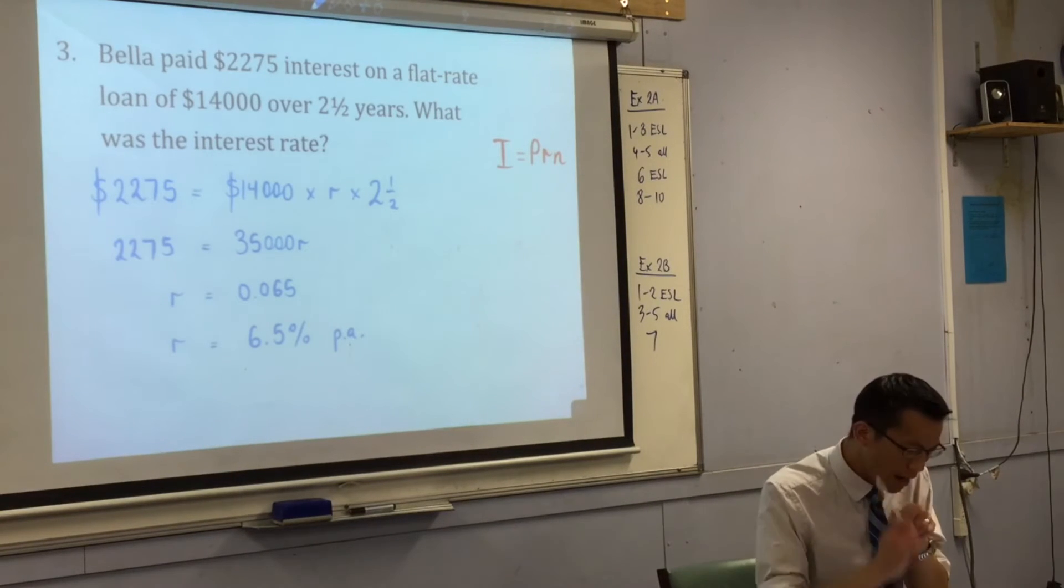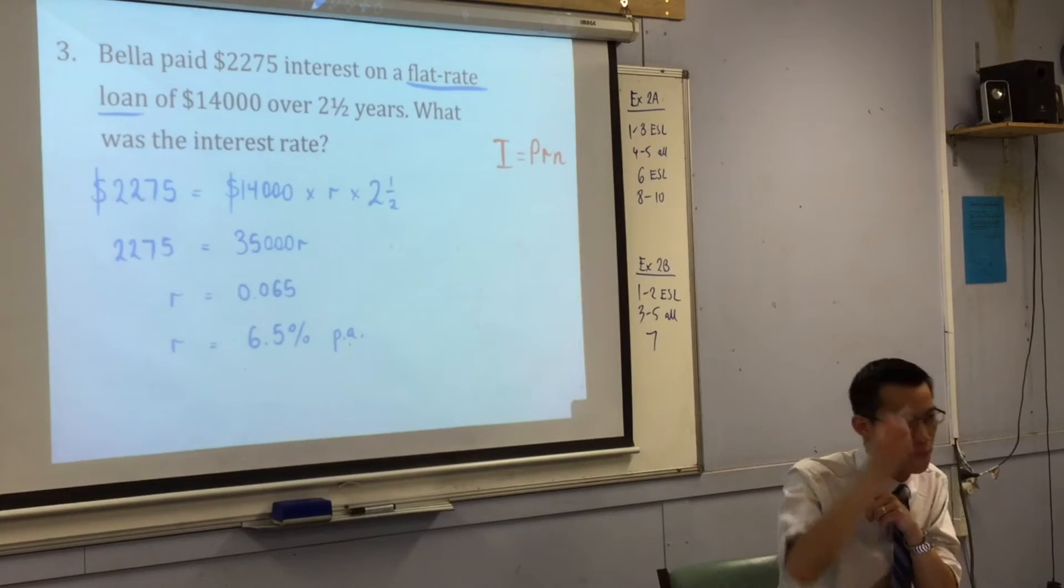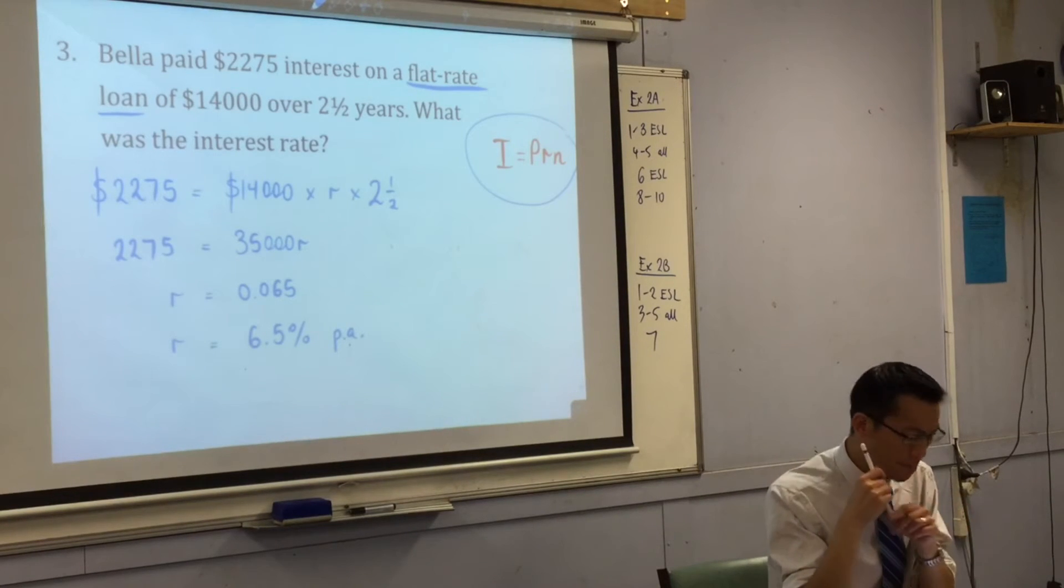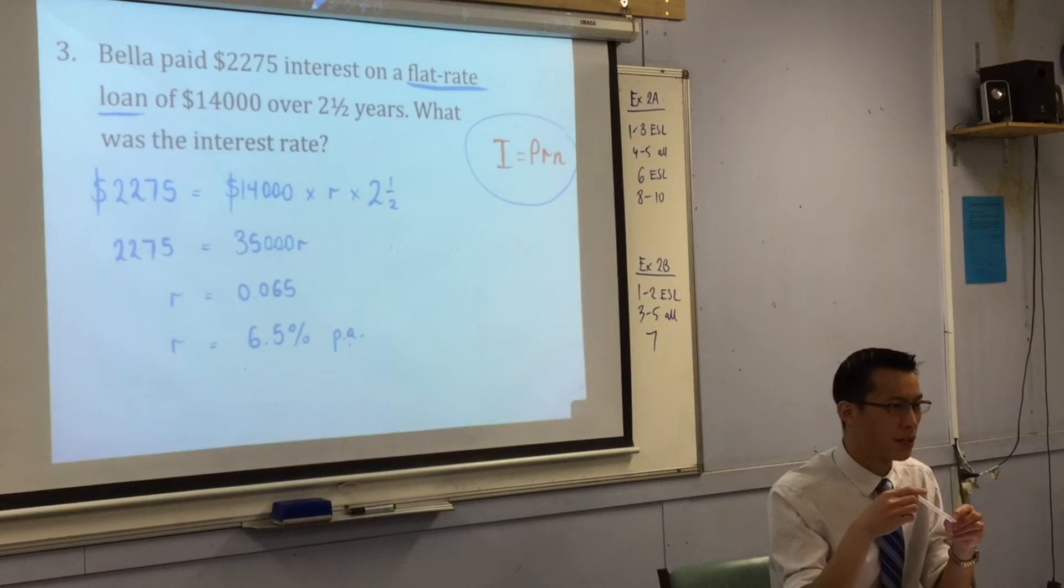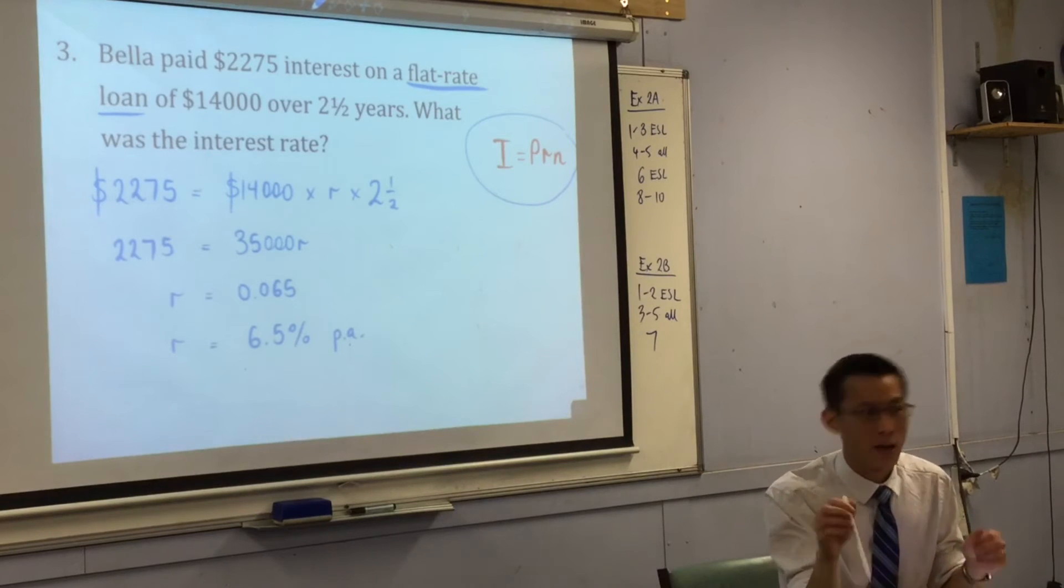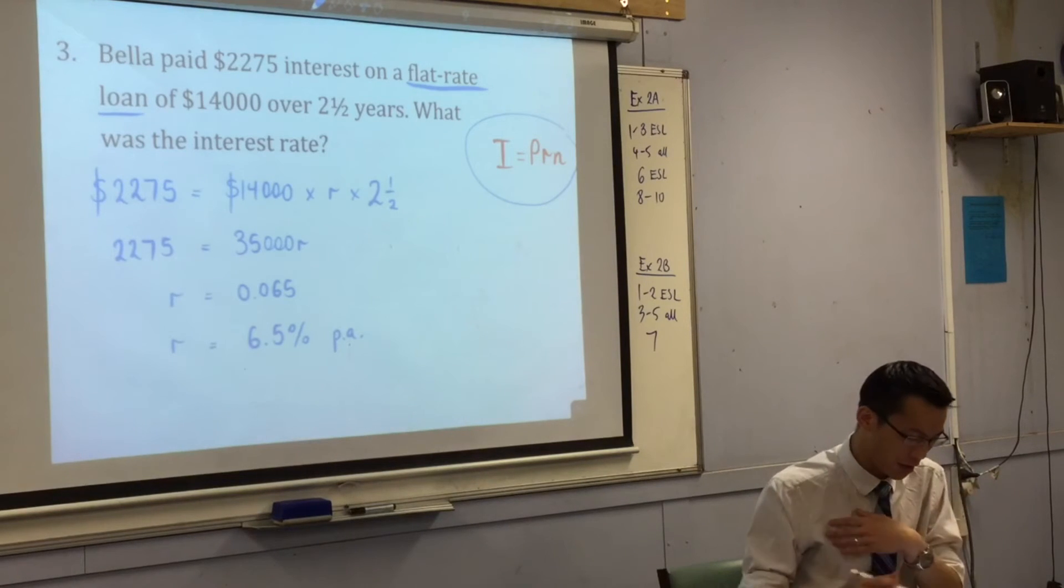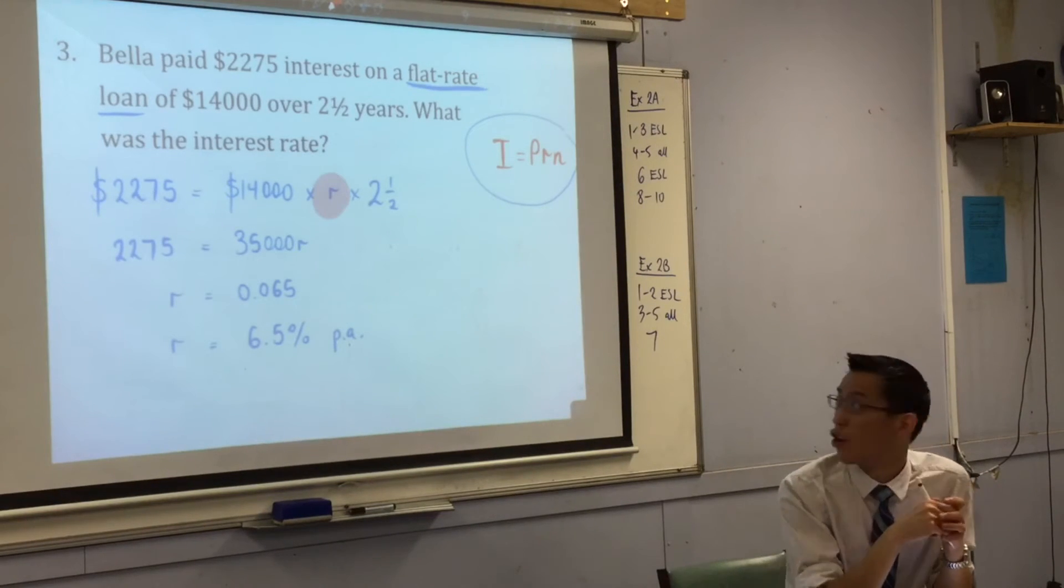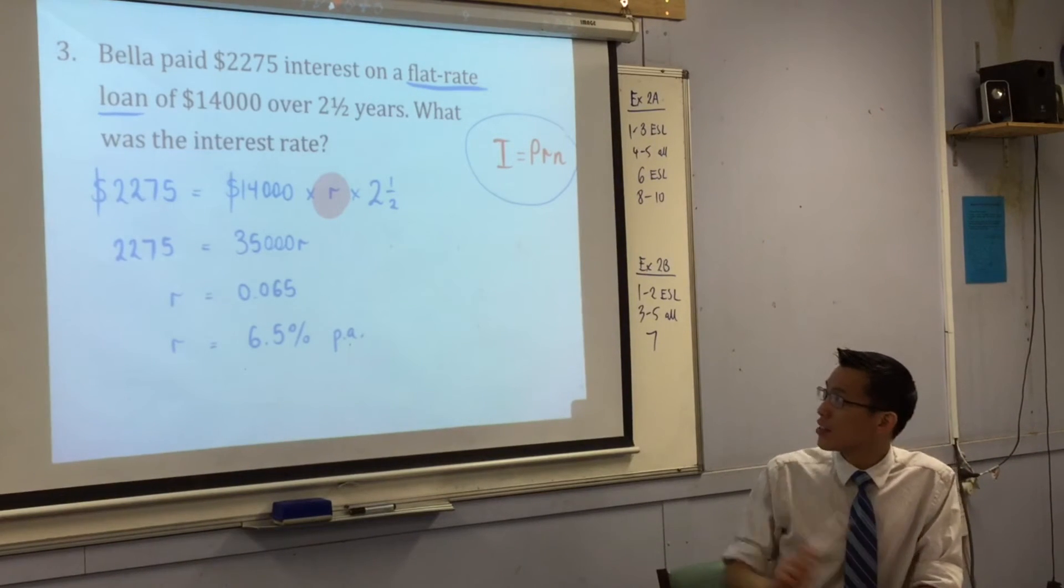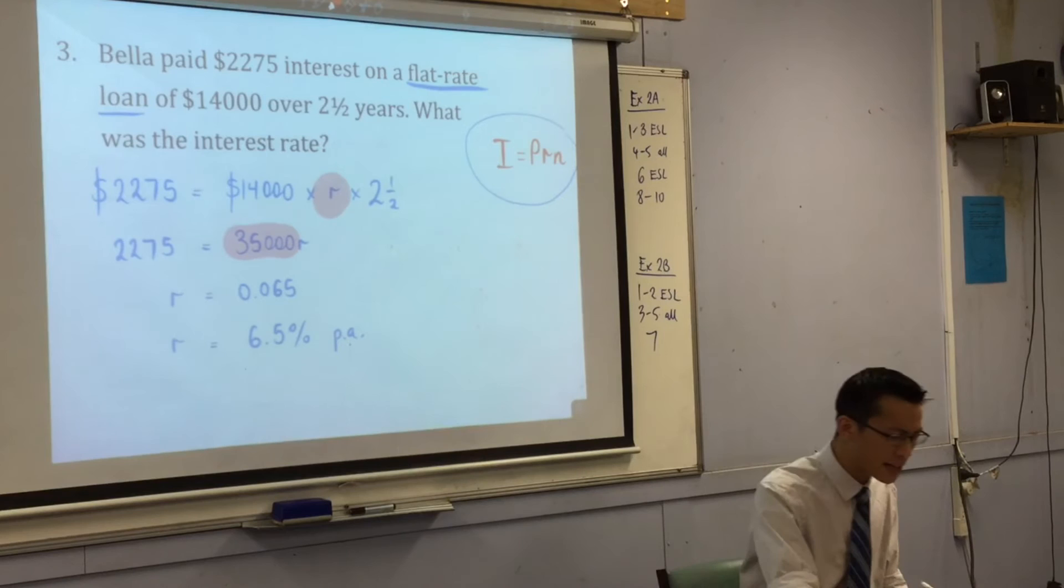We're on number three. You can see, hopefully, again, flat rate loans. So again, your brain triggers simple interest. So that's why I've written over here the simple interest formula. But we're using it in a different way to how we used it in question one. What's different in this question? You're trying to find the rate. Earlier on, we're trying to find the interest as a dollar amount. But here, I'm trying to find the interest as a rate, as a percentage. So you can see right there, there's my unknown. I don't know what R is, so I just leave it as R. The rest of it, you can see, this is what I got when I multiplied 14,000 by 2.5. What did I do? Can someone help me out?